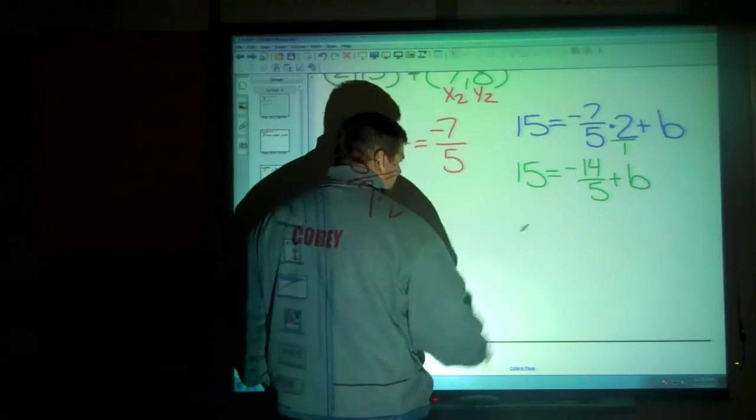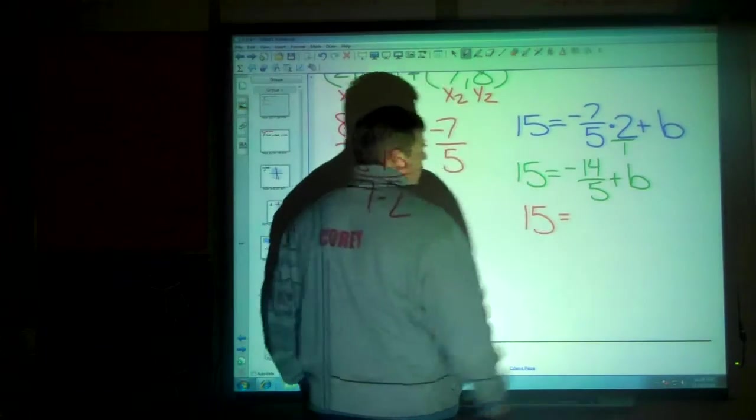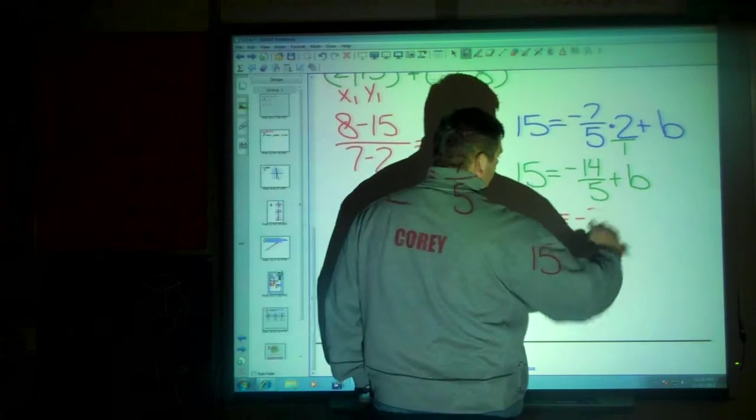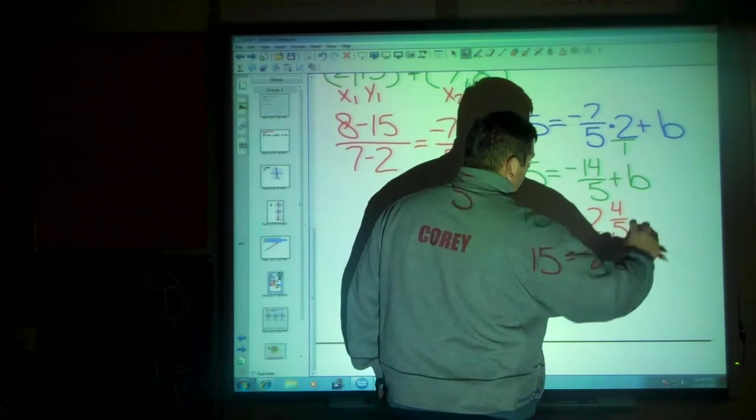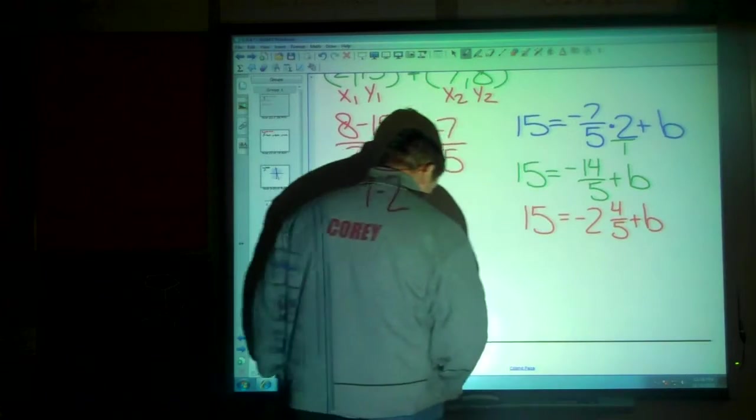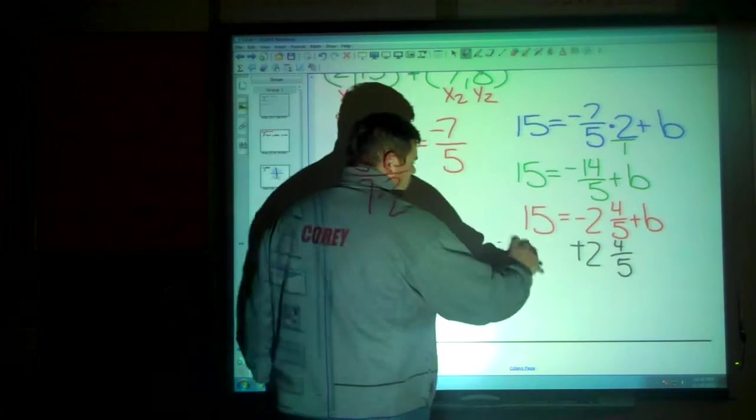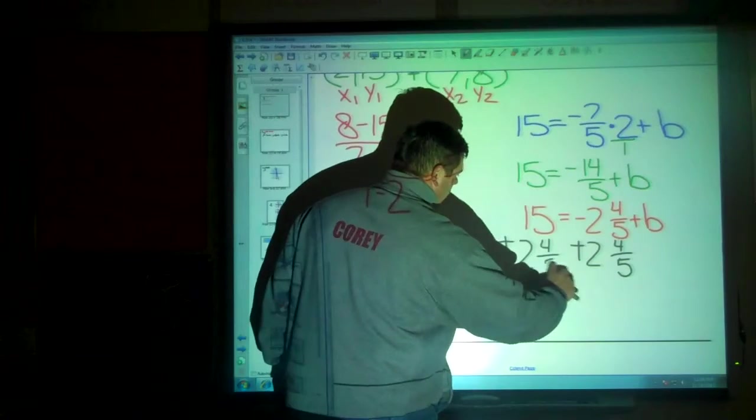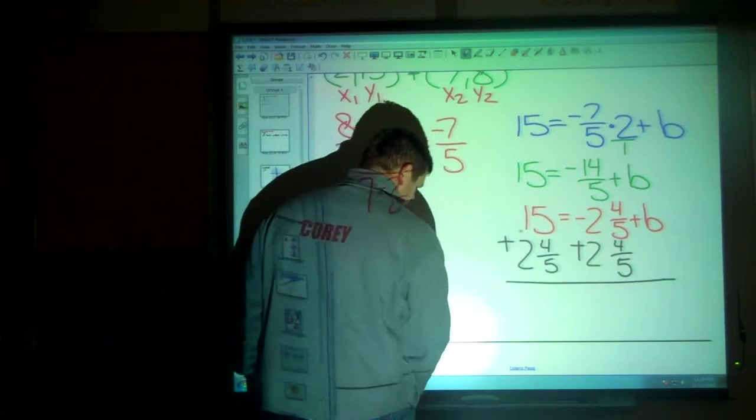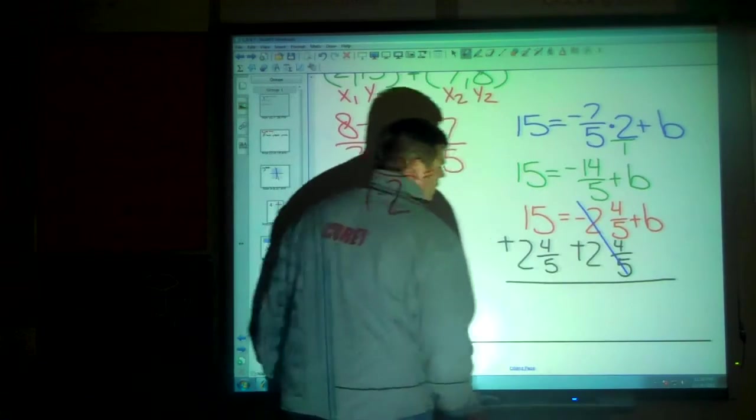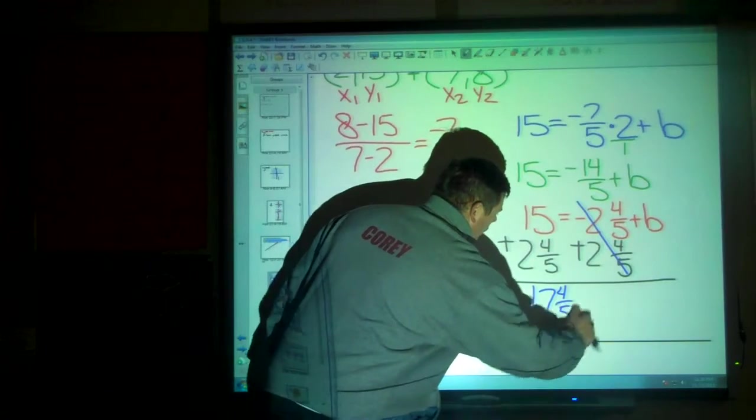Now if you want, you can convert this improper fraction into a mixed number. You could say this is 15 is equal to negative 2 and 4 fifths plus B. So you could add 2 and 4 fifths here. Those cancel out. And you get a B value of 17 and 4 fifths.